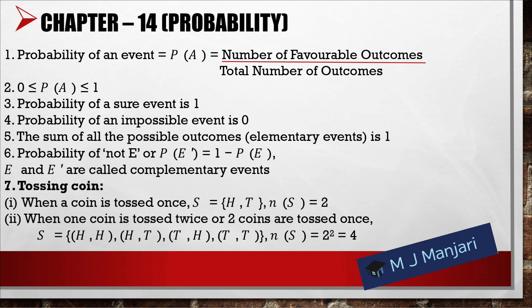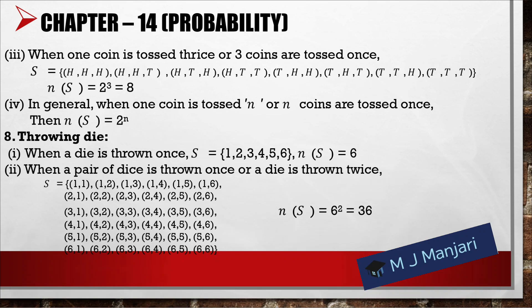Seventh, tossing a coin: when a coin is tossed once, outcomes are head and tail, so number of outcomes = 2. When one coin is tossed twice or two coins are tossed once, outcomes are HH, HT, TH, TT — so number of outcomes = 2² = 4. When one coin is tossed three times or three coins are tossed once, outcomes are HHH, HHT, HTH, HTT, THH, THT, TTH, TTT — so number of outcomes = 2³ = 8. In general, when one coin is tossed n times or n coins are tossed once, the number of outcomes = 2ⁿ.